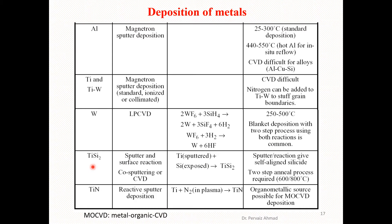For titanium disilicide (TiSi₂) deposition, sputtering and surface reactions can be used, as well as cobalt sputtering or CVD. Titanium sputtering on exposed silicon yields titanium disilicide. The sputtering reaction gives a self-aligned silicide (salicide), while other techniques require a two-step process at 600 to 800 degrees centigrade.